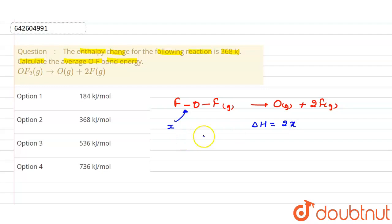For this twice of x, in this question the value given is 368. So from here we can find the value of x, which is the average energy required to break one OF bond.